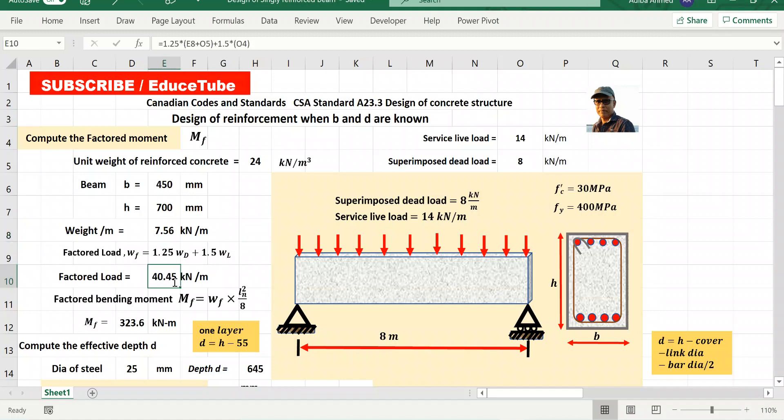It is 40.45 kilonewton per meter. If you look you will see here I have taken this dead load, this 8 plus the self weight multiplied by 1.25 and this live load multiplied by 1.5. So we got this.